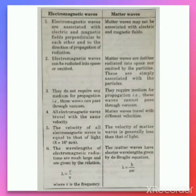Sixth difference: the wavelength of electromagnetic radiation is given by the relation λ = c/ν. But for matter waves, the wavelength is given by λ = h/mv, as given by de Broglie. So these are the six differences between electromagnetic waves and matter waves.